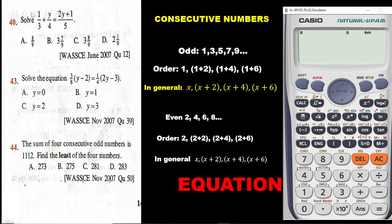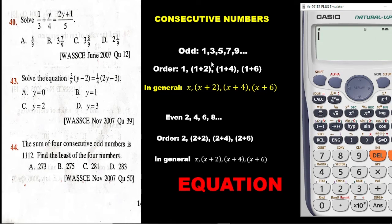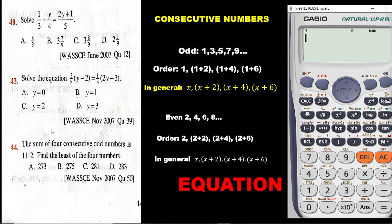The question says: solve 1 over 3 plus y over 4 equals 2y plus 1 over 5. Now, the manufacturers of the calculator use x as the default variable. So when dealing with equations, any other variable we see we are going to change into x. In this question, we are going to replace the y with x.